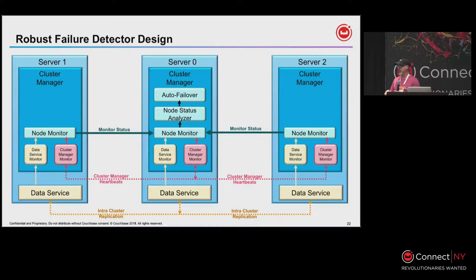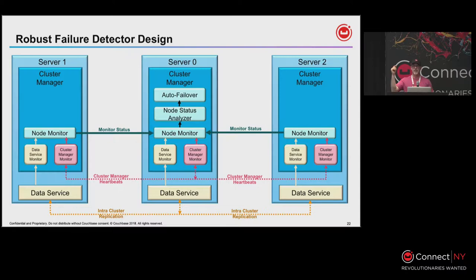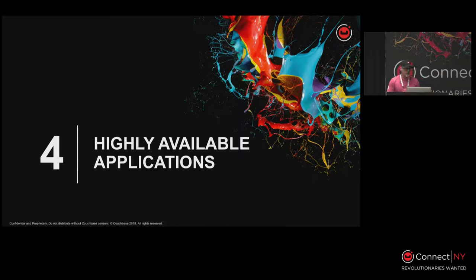The system acts like a marshal — everyone reaches consensus that a failure really happened, then takes action to fail out the problematic node. The failed node is out of the picture; the remaining nodes figure it out together. This process runs on every node — it's not a singular node, just one node per event at a time — so all nodes are truly equal. That covers the Couchbase server side; now over to the application side for building a highly available application.